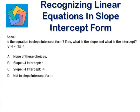Next problem: is the equation in slope-intercept form? If so, what is the slope and what is the intercept? The equation is -y - 4 = -3x - 4. Our slope-intercept form is y = mx + b — only y, by itself, is equal to the expression. This extra -4 on the left side is not part of slope-intercept form, so this equation is not in slope-intercept form.